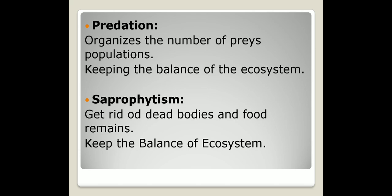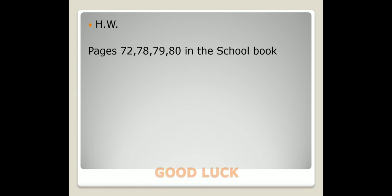So predation and saprophytism can keep the balance of the ecosystem. This is the end of our lesson and the last of our syllabus. Please, Junior 5, study well and do the homework on pages 72, 78, 79, and 80 in the school book. Good luck!